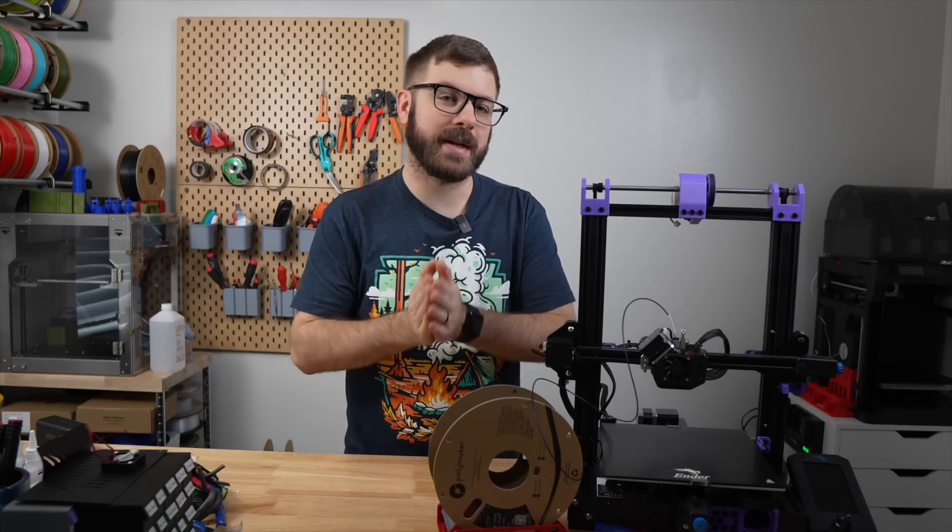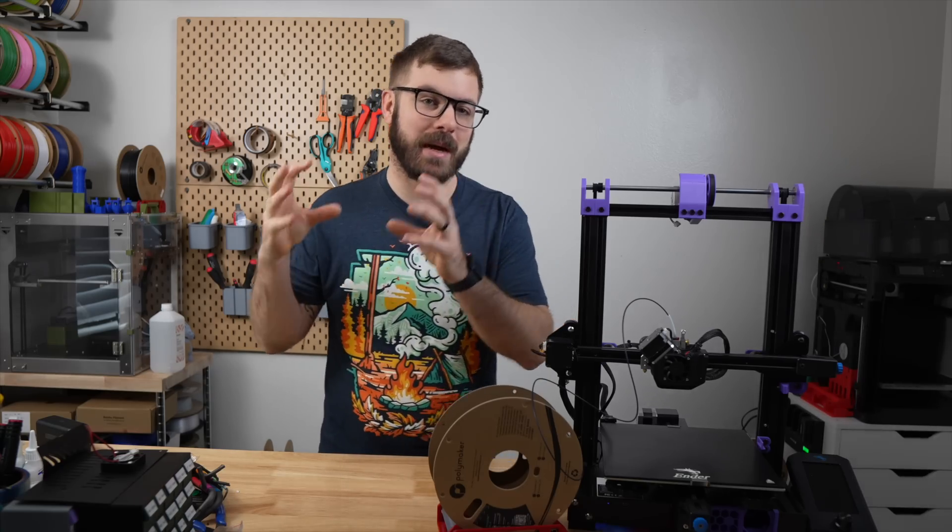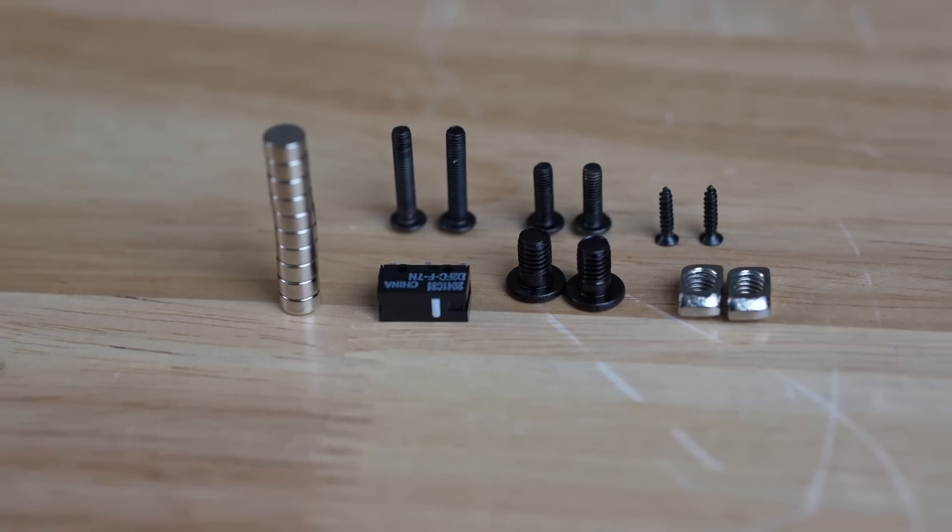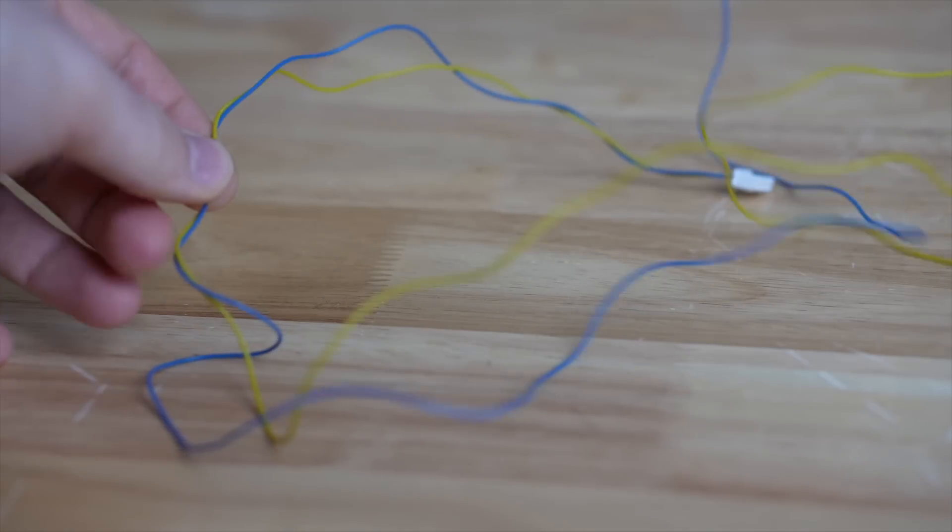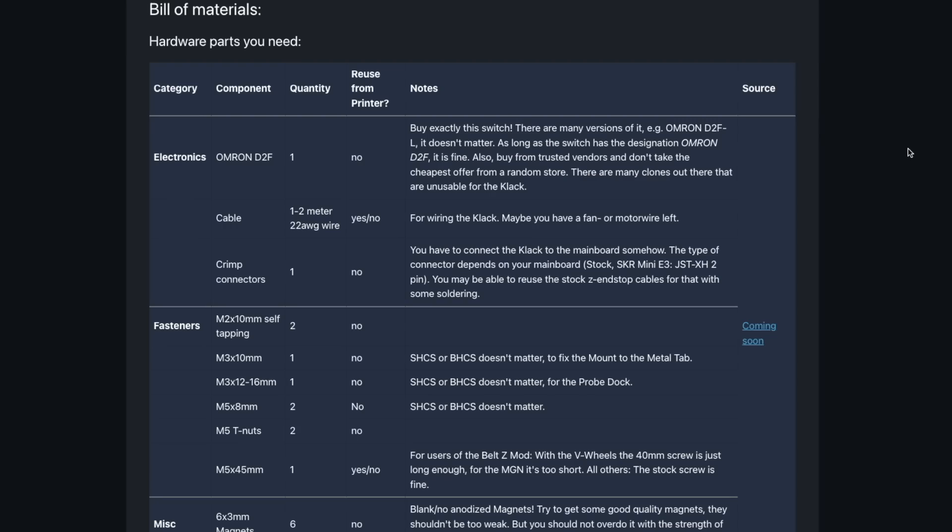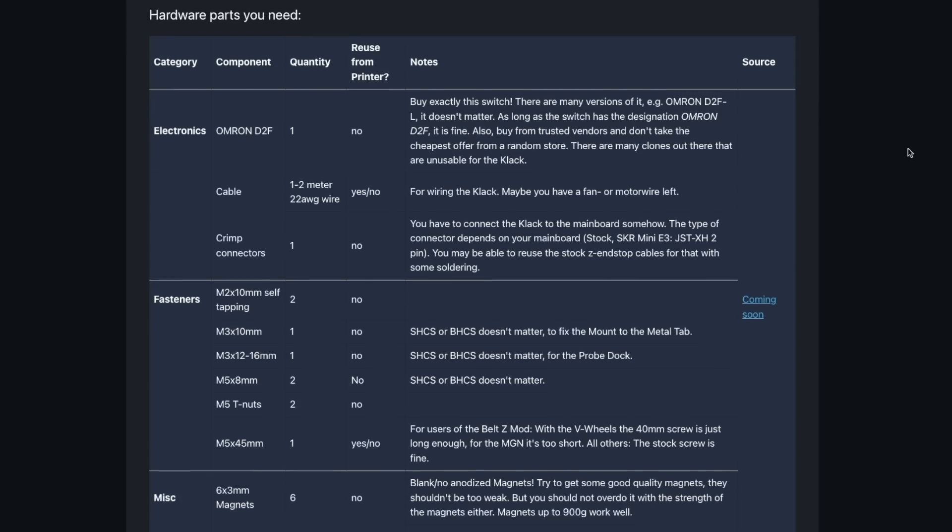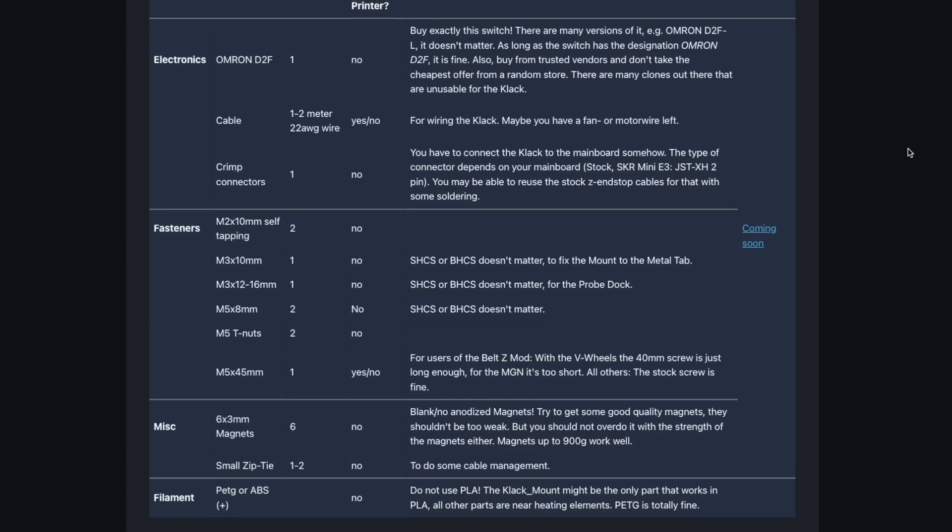All clicky probes I've set up are based on the same main parts, which are the Omron D2F or D2FL micro switch, six by three millimeter magnets, a few screws, and some wire. The Clack Ender has a very nice BOM, including the needed screws, so you can make sure you have all the hardware needed.